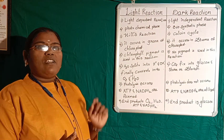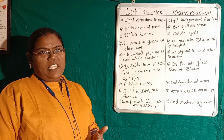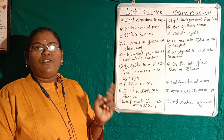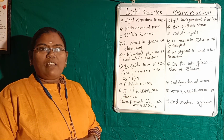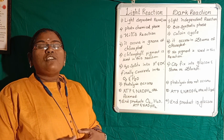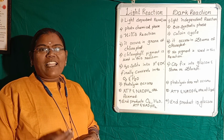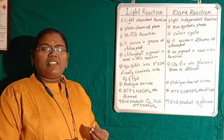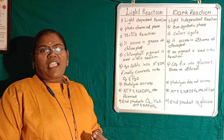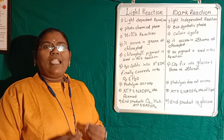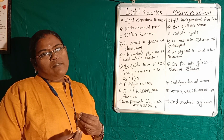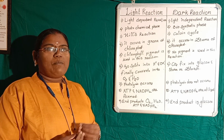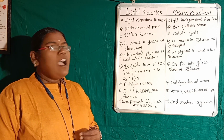Coming to the other names — light reaction is also called the photochemical phase. Photo means light, chemical means chemical energy. It means that in this reaction, light energy is converting into chemical energy. That is why it is called the photochemical phase.